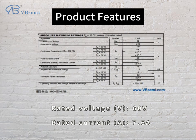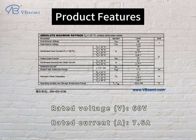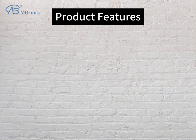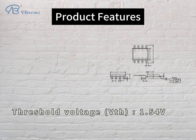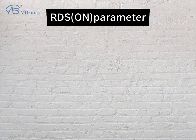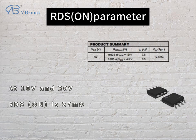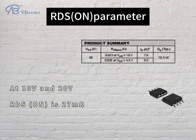Rated voltage: 60V. Rated current: 7.6A. Threshold voltage VTH: 1.54V. RDS(on) parameter: at 10V gate and 20V, RDS(on) is 27mΩ.